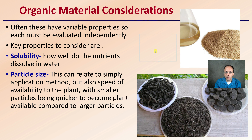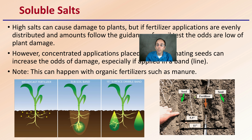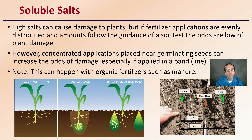Organic materials often have variable properties, so each must be evaluated independently. Key properties include solubility — how well nutrients dissolve in water; fish fertilizer, for example, can have very low solubility. Particle size relates to both application method and speed of availability, with smaller particles becoming plant-available more quickly. Soluble salts also apply to organic and inorganic fertilizers. High salts can damage plants, but if applications are evenly distributed and follow soil test guidance, the odds of damage are low. Concentrated applications placed near germinating seeds — especially in a band — increase the risk.